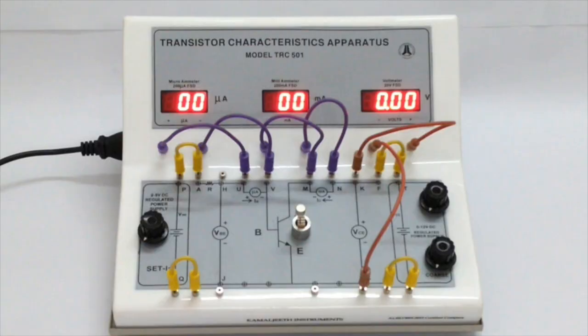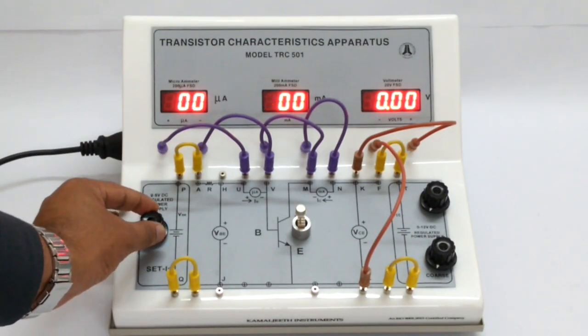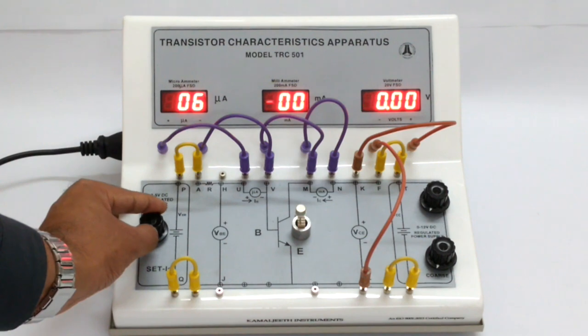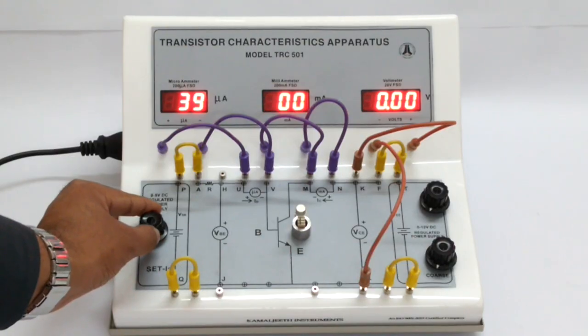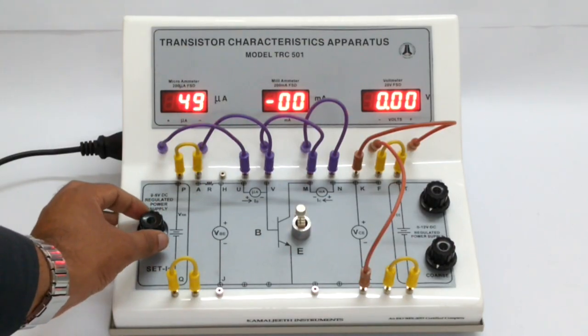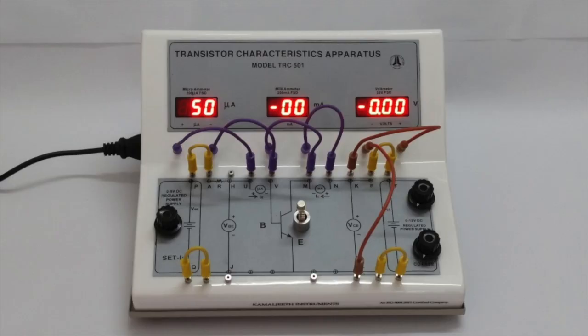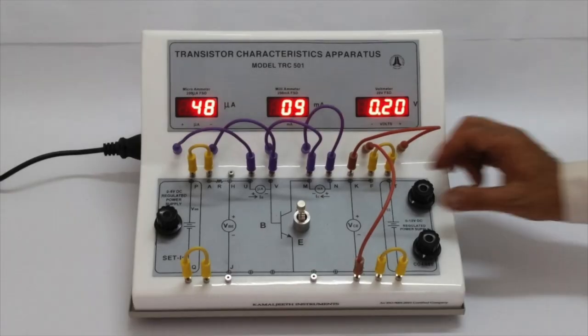By turning the input power supply knob, the base current IB is varied so that the microammeter reads 50 microamps. Keeping IB constant, VCE is varied from 0 to 12 volts slowly in the beginning and then in steps of 1 volt. VCE and the corresponding collector current IC are noted.